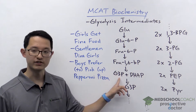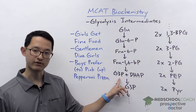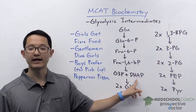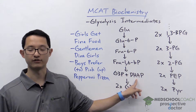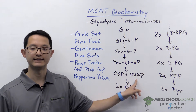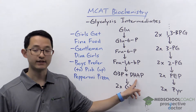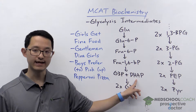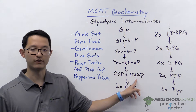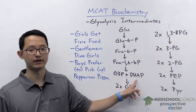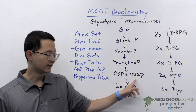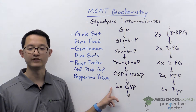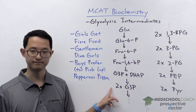The two 3-carbon sugars are glyceraldehyde 3-phosphate (G3P) and dihydroxyacetone phosphate (DHAP). Dihydroxyacetone phosphate is then also converted to glyceraldehyde 3-phosphate, so we end up with two molecules of G3P.